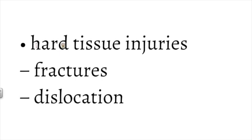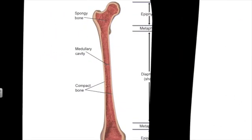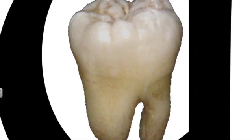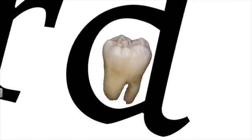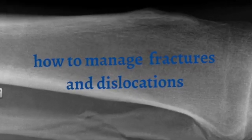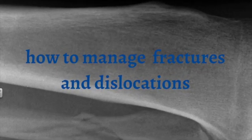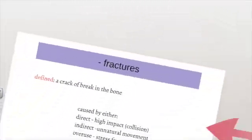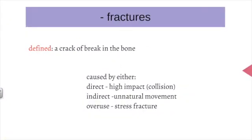A quick recap of hard tissue injuries: a hard tissue injury is any injury involving a bone or teeth. Basically every other type of injury is soft tissue, but hard tissue involves bones and teeth. The right hand side of the syllabus talks about how to manage fractures and dislocations, with an emphasis on immobilization. So let's get to the first dash point: fractures.